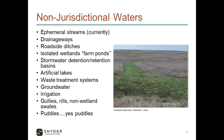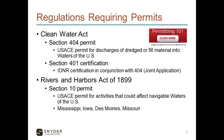Moving forward onto non-jurisdictional waters, basically anything that is not considered a wetland by definition, or does not have a defined bed and bank that could be determined to be a stream, is likely non-jurisdictional if it does not have direct connectivity to a jurisdictional feature. So we now understand what natural resources are protected under the Clean Water Act and which resources the Corps and EPA have jurisdiction over.